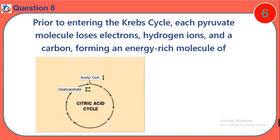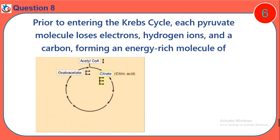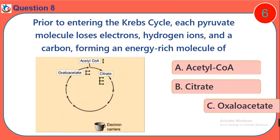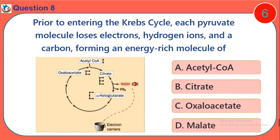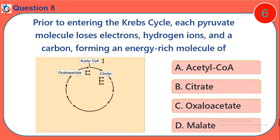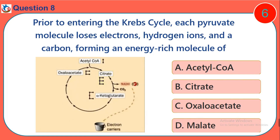Question 8. Prior to entering the Krebs cycle, each pyruvate molecule loses electrons, hydrogen ions, and a carbon, forming an energy-rich molecule of: A. Acetyl-CoA. B. Citrate. C. Oxaloacetate. D. Malate.